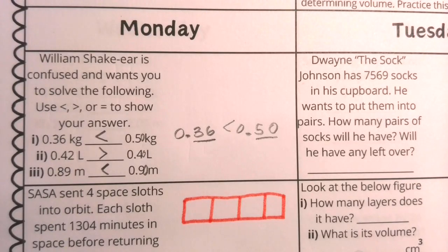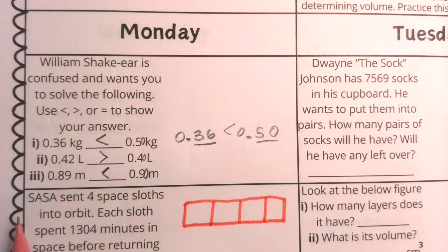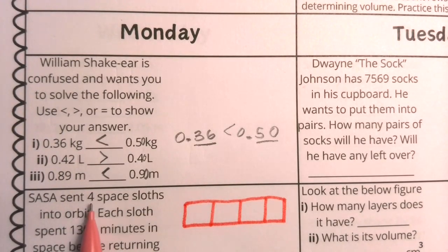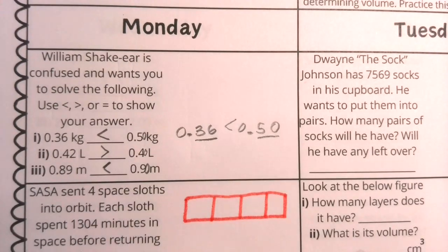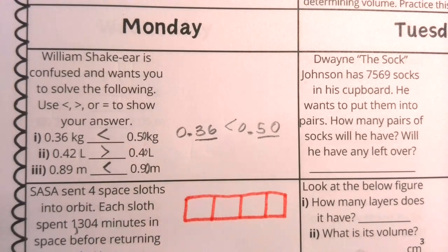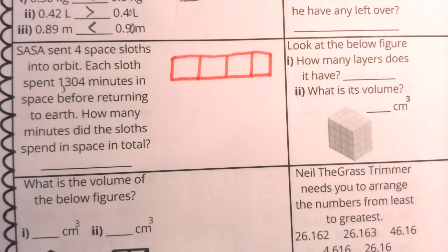All right, boys and girls, let's go ahead and take a look at our next values here. We have got SASA, and it sent 4 space sloths into orbit. Each sloth spent 1,304 minutes in space before returning to Earth. How many minutes did the sloths spend in space in total? So here, boys and girls, we're going to be multiplying.